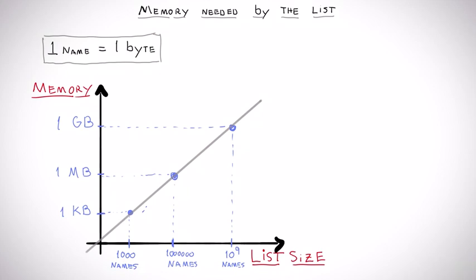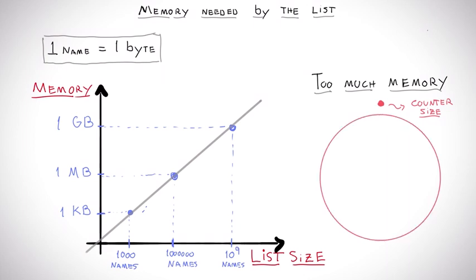Even though a gigabyte may not sound like a lot nowadays, it is way too much memory to maintain a simple counter. The information we want is only the count, which is a number that may fit in a few bytes. Using a billion times this to store useless auxiliary information is not ideal.